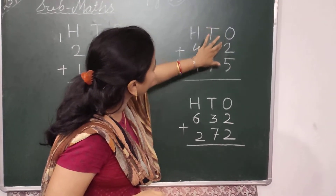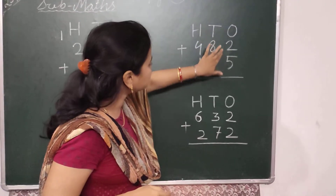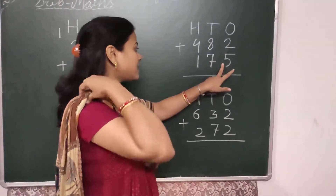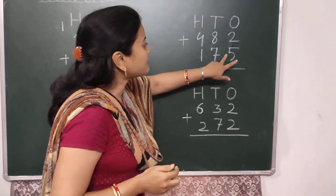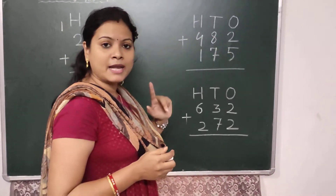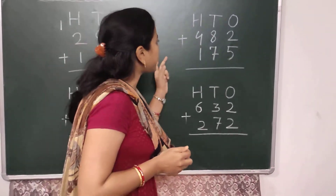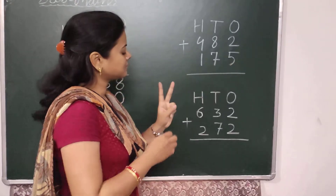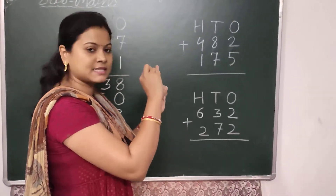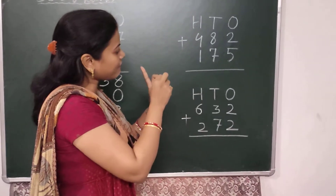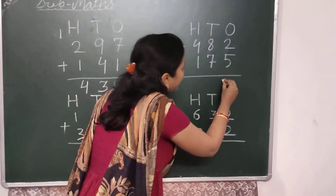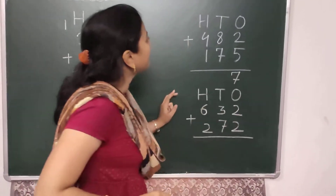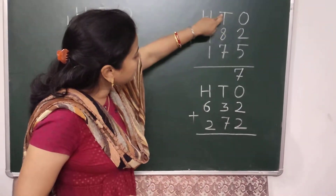Here in the 1's place, the numbers are 5 and 2. 5 is the larger number, so I keep 5 in my mind and take 2 fingers: 5, then 6, then 7. I write here 7.